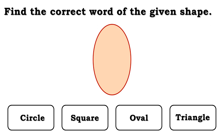The words are circle, square, oval, and triangle. But the correct word for this shape is oval.